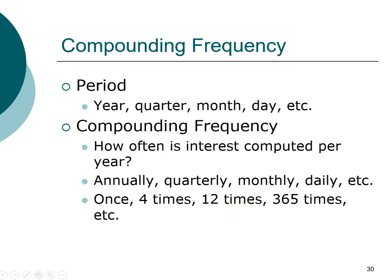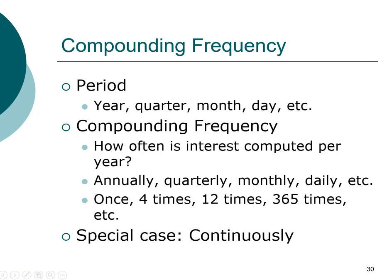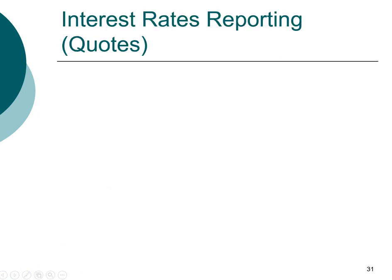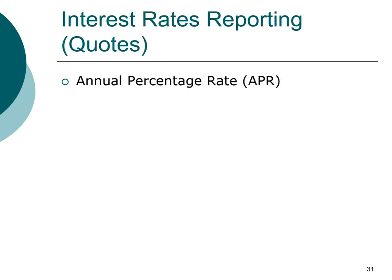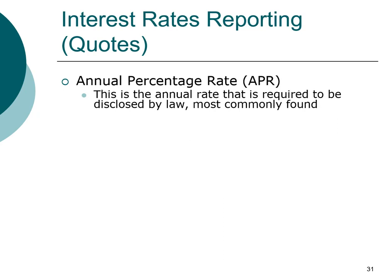A special case is continuous compounding, which we'll look at later. Compounding frequency directly affects the actual interest that you end up paying. By law, government regulation requires companies to disclose the annual percentage rate, which is called APR. This is the rate required to be reported by law and therefore is most common. If you walk into a bank, the interest rate being displayed is the APR. If you get a credit card application, what's printed in large numbers is the APR, and this is what is advertised.